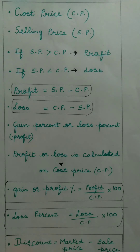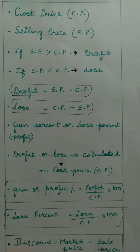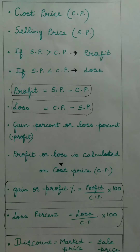Hello children. This is 8th Standard Maths in your part 2 textbook, chapter 8, Comparing Quantities. In the part 1 video of this chapter, we had studied ratio and percentage and solved the problems. In today's video, let us study about cost price, selling price, profit and loss, discount, simple interest, compound interest and tax.